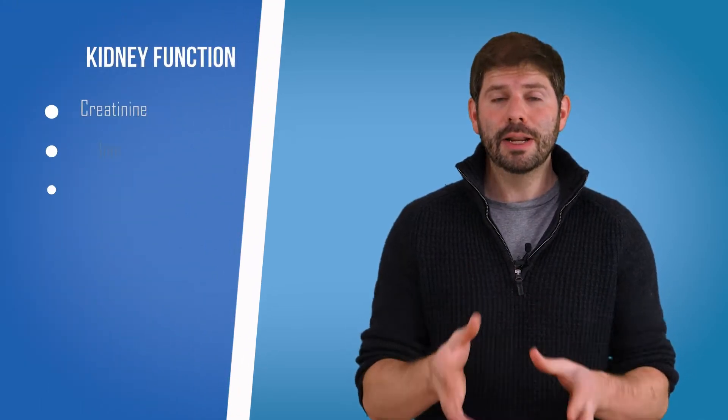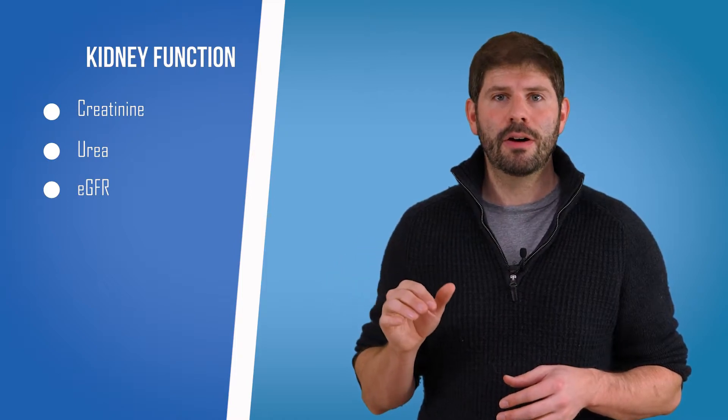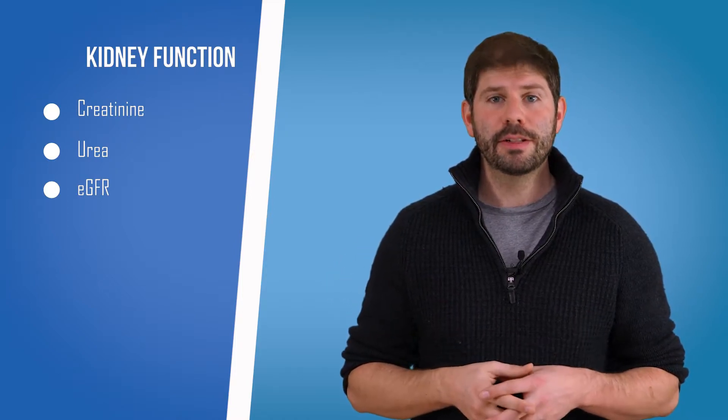Kidneys – you've got two of them, one here and one here. They filter your blood, get rid of all the waste, and produce your urine. When we're measuring your kidney function in blood test form, we're looking at your creatinine, your urea, and your eGFR or estimated glomerular filtration rate.